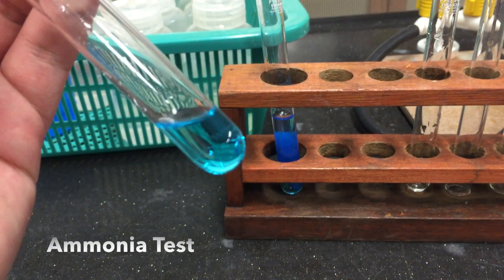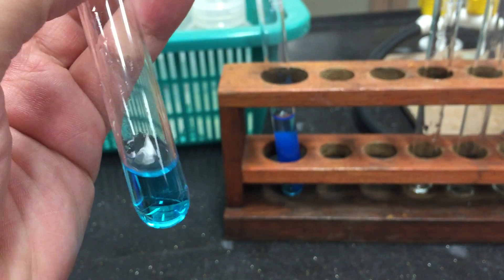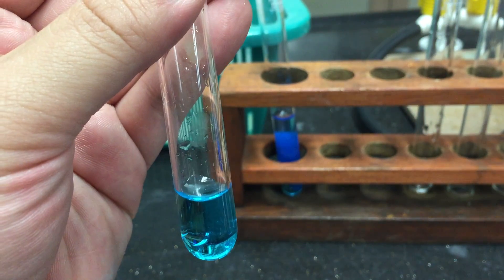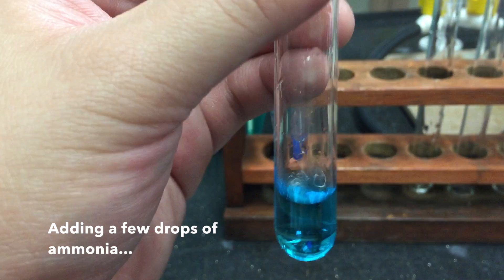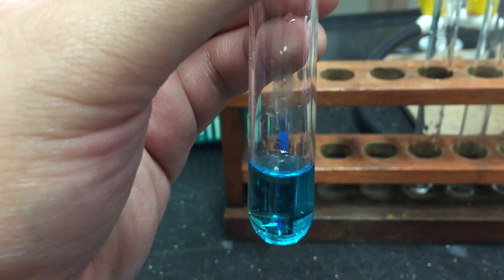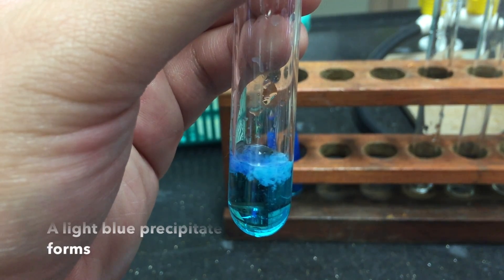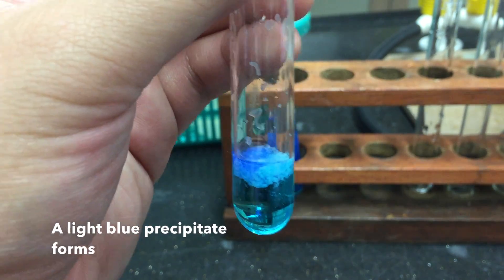Another test you can use is the ammonia test. To a small sample of your solution, add a few drops of ammonia solution. You will notice a light blue precipitate forms immediately.